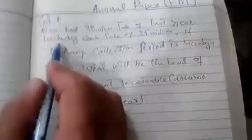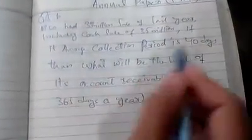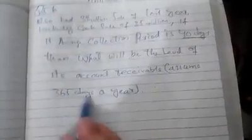This is question number 5B. MCO had 300 million sales last year, including cash sales of 35 million. If the average collection period is 40 days, then what will be the level of account receivable? Assume 365 days a year.